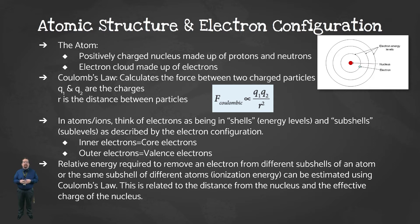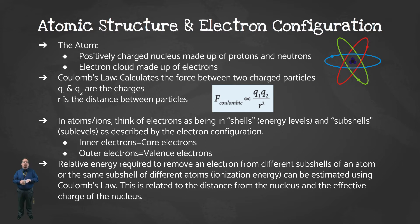The inner electrons are called core electrons, and the electrons in the highest principal energy level, or the energy level furthest from the nucleus, are called valence electrons. You can use Coulomb's law to qualitatively estimate the relative energy required to remove an electron from different subshells of an atom. If the electrons are closer to the nucleus, there are higher forces of attraction. Therefore, it takes more energy to pull that electron away.